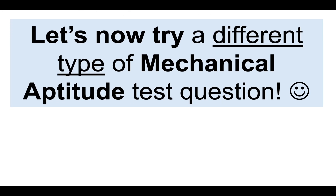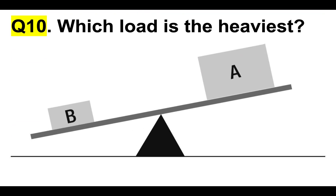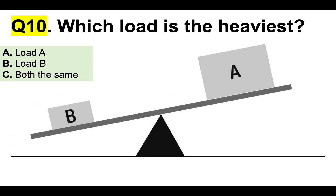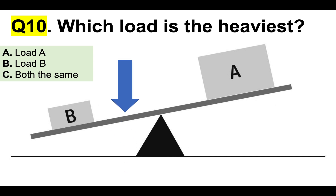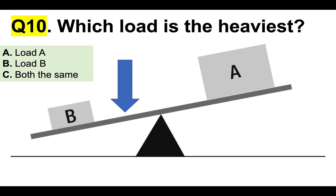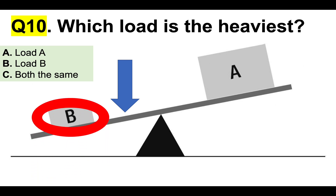Let's now try a different type of question. Which load is the heaviest — A, B, or C — both the same? The clue is that the bar resting on the fulcrum in the middle is tilting to the left, which indicates that B is the heaviest load. Don't fall into the trap of thinking A is a larger box, therefore heavier — look for clues. The balancing beam is tilting to the left of the fulcrum, which means B is the correct answer.